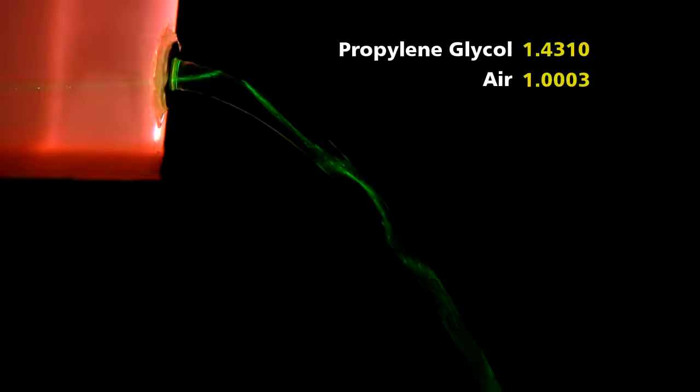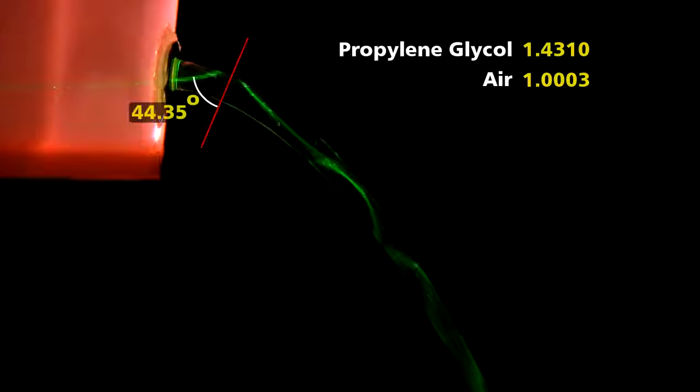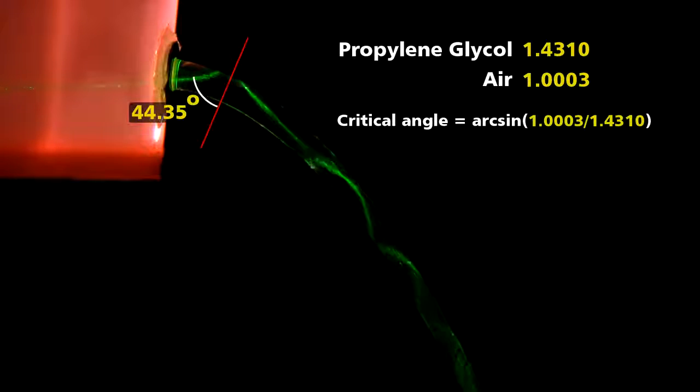For this propylene glycol and air system, as long as a beam hits the surface at an angle greater than 44.35 degrees measured from the normal, it will propagate down the stream via total internal reflection.